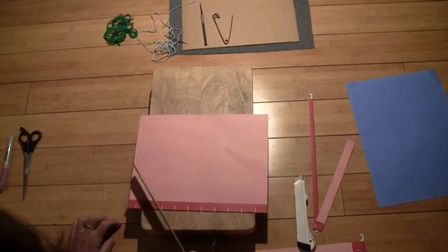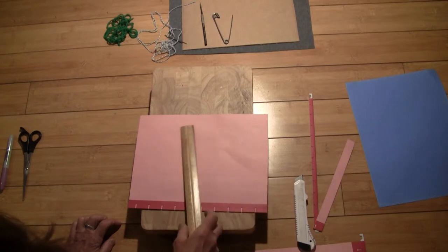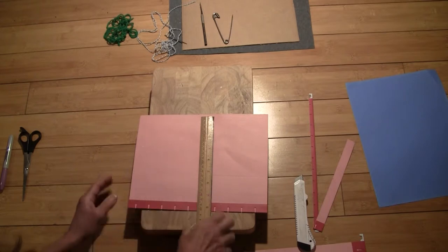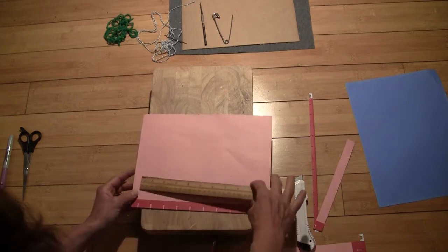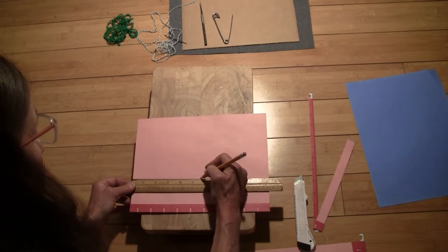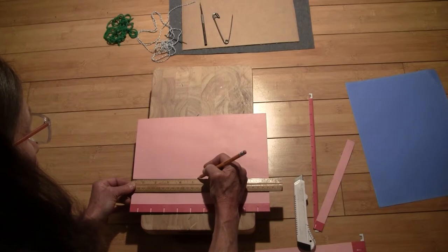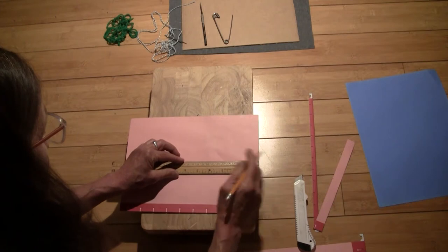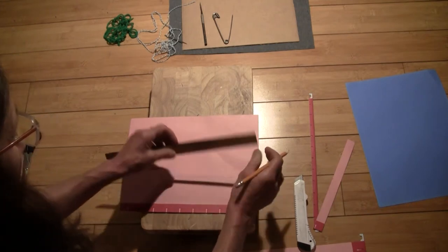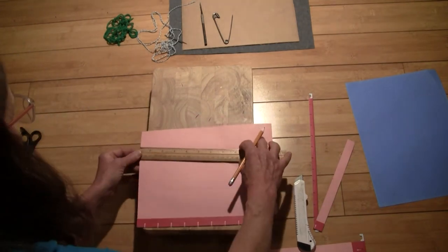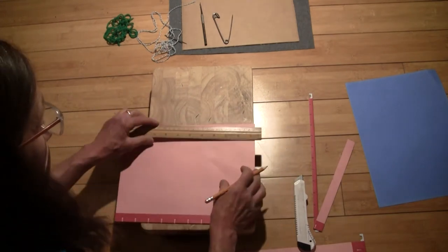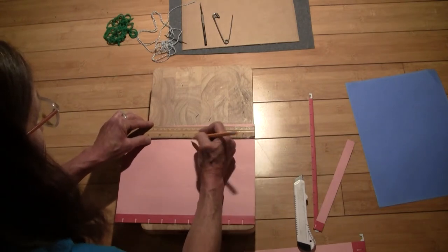Then I'm going to measure in five and a half inches from each side because I want to make a half inch channel down the middle that's going to be the back of my journal. Actually, I'm going to go five and a quarter and five and a quarter. I forgot it's 11, not 11 and a half. Good time for math.